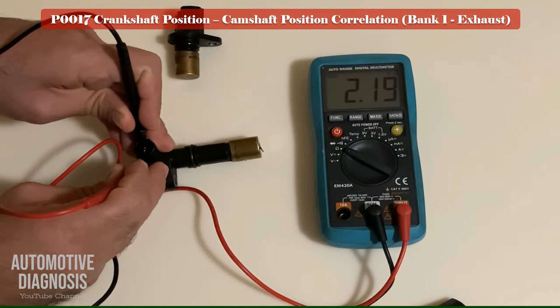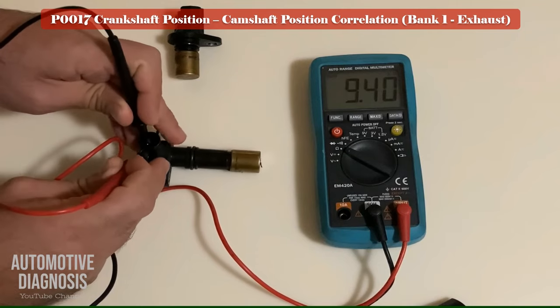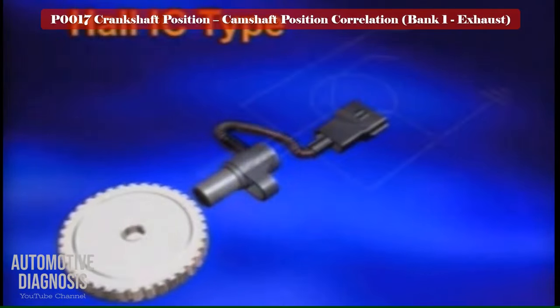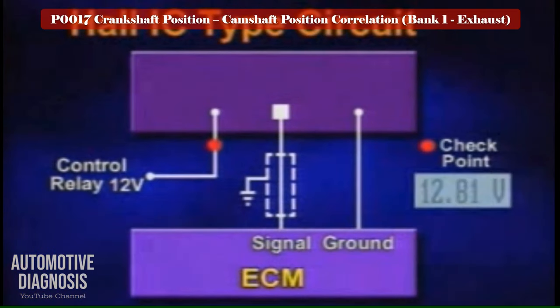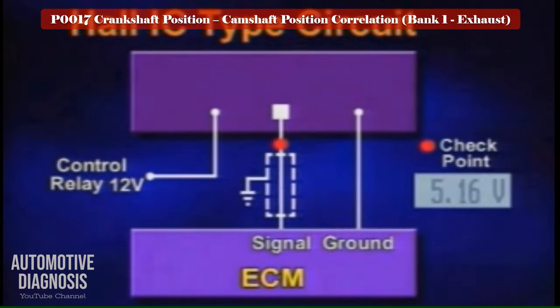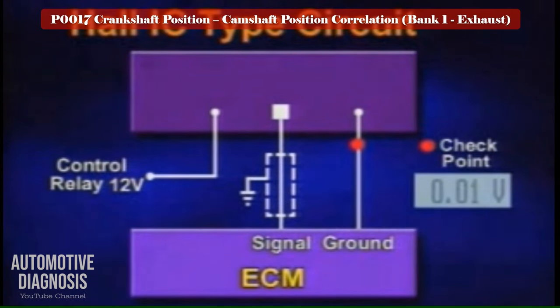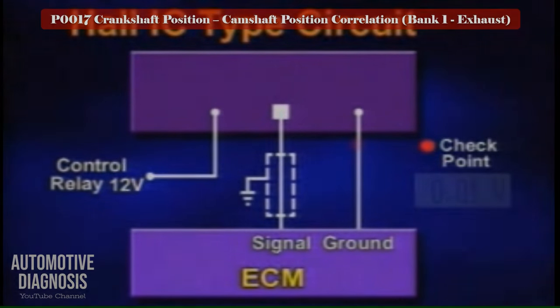If you have the Hall IC type crankshaft position sensor, the testing procedure is similar to the camshaft position sensor — check the power supply, signal, and ground. If both sensors are okay, go to the next step to test the bank one exhaust VVT.